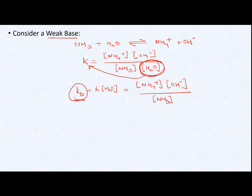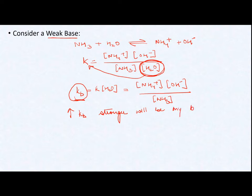This is not the acid ionization constant — this is the base ionization constant. Greater the value of Kb, the stronger the base will be.